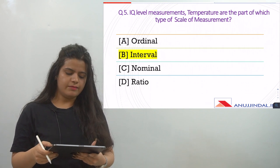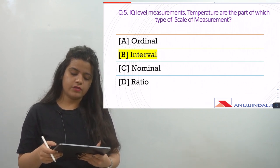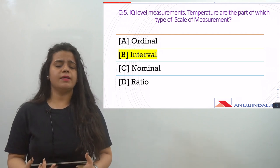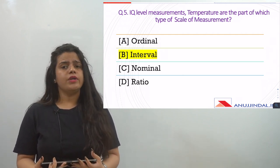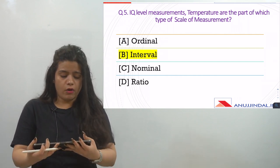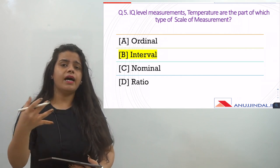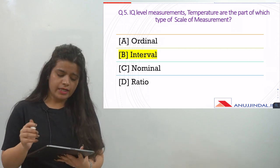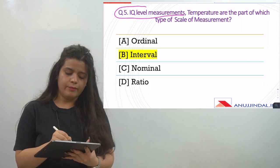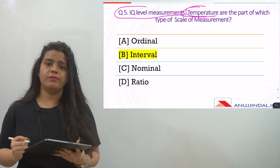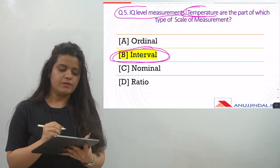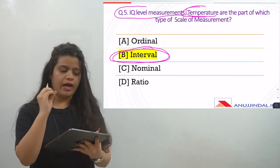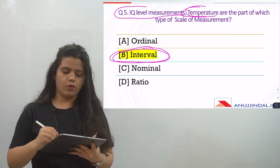The fifth question is: IQ levels, measurements, and temperature are part of which type of scale of measurement? Scales of measurement — ordinal, interval, nominal, and ratio — are also important for exams every year. You need to know their definitions, examples, and what falls under each. The answer here is the interval scale of measurement, because IQ level measurement and temperature both fall under interval scale. These are numerical measures where the interval between values is meaningful.